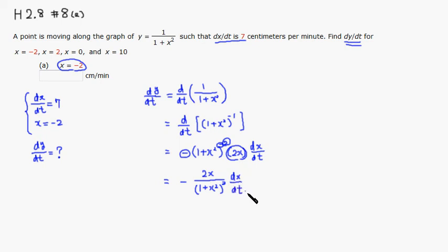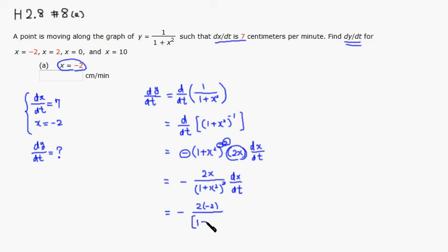We now plug in the given values. x is negative 2, so we substitute that in: we get negative 2 times negative 2 in the numerator, quantity (1 + (negative 2)²) squared in the denominator, and dx/dt is given as 7.